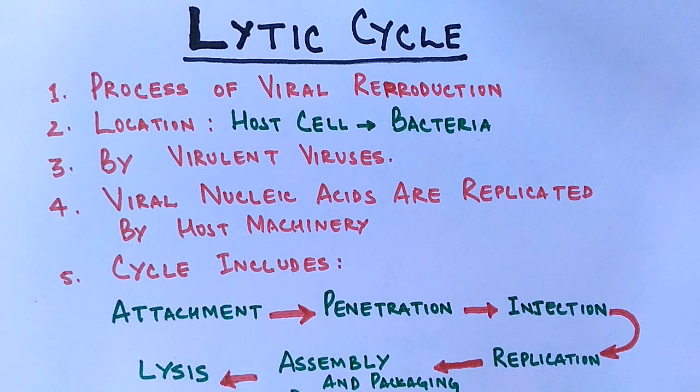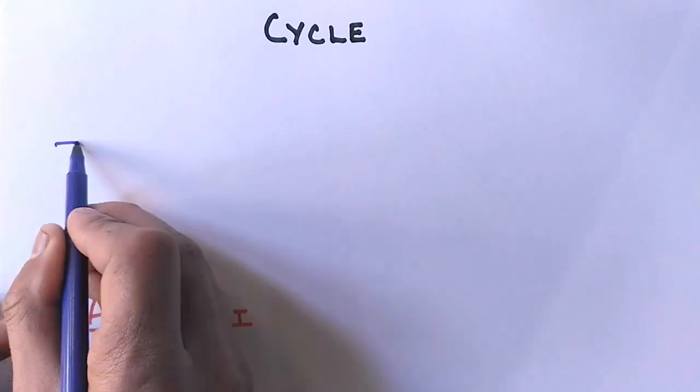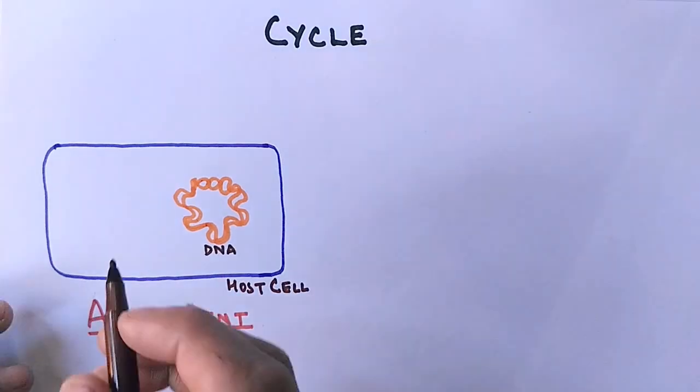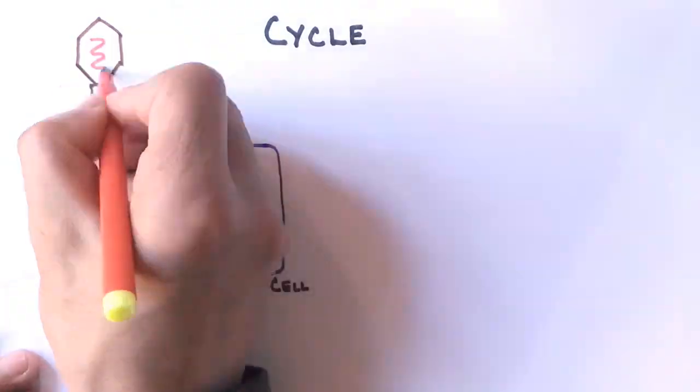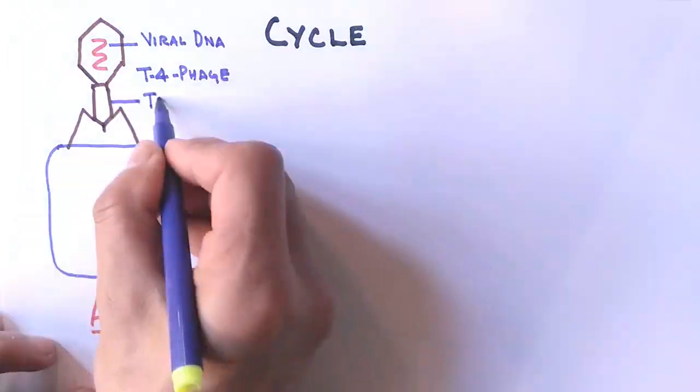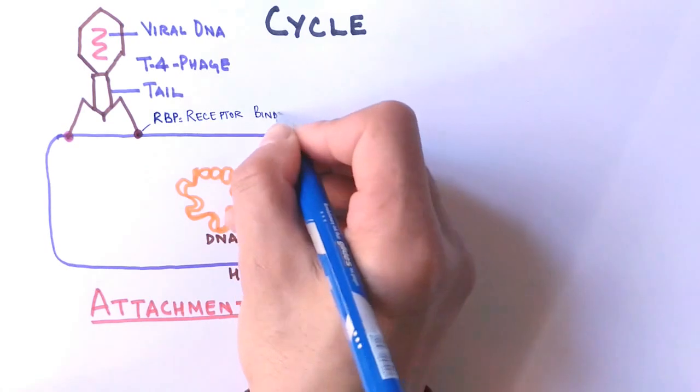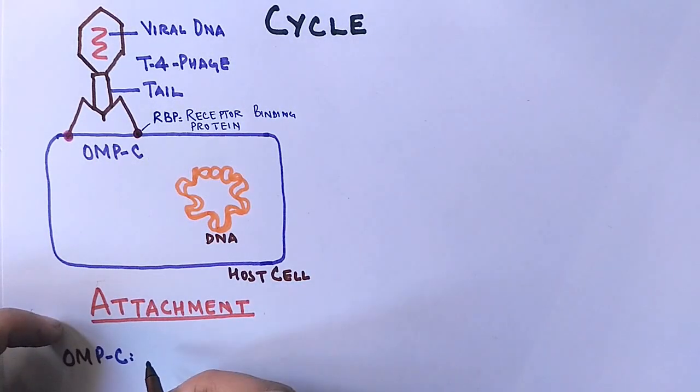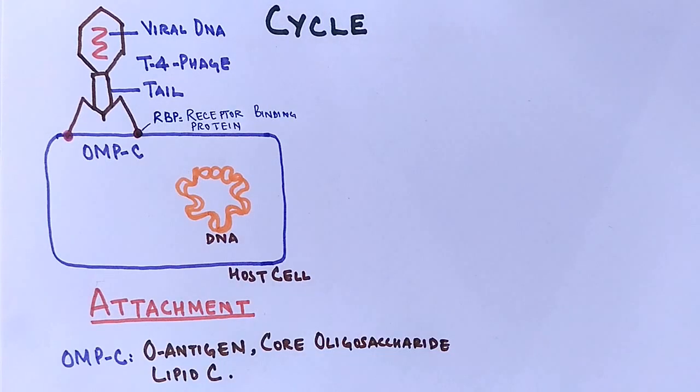Now let's see this life cycle in detail. First step is the attachment of virus towards host cell. We have a bacterial cell here and it has got its own DNA molecule. The virus lands on the host cell and attaches itself towards the bacterial cell wall by using its receptor binding protein. You can see in this diagram the receptor binding protein of viruses. This receptor binding protein interacts with OMPC, that's O antigen core oligosaccharide lipid C. This is the bacterial cell wall component that interacts with receptor binding protein of bacteriophages and confirms binding.